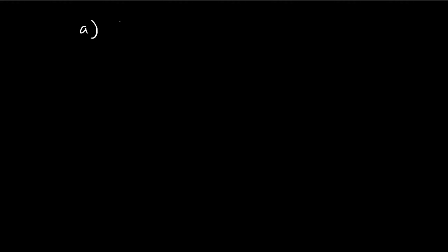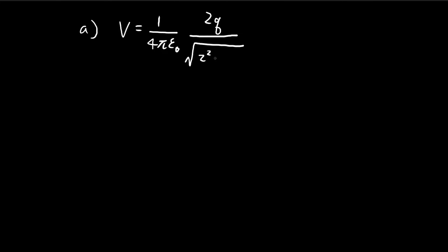Let's move on to the solution. For part A, I'm just going to write out the answer — there's really not much going on. You have two point charges, so you add up the potential from the two points. The principle behind this answer is the principle of superposition: you just add up the two potentials. That's the answer for part A.